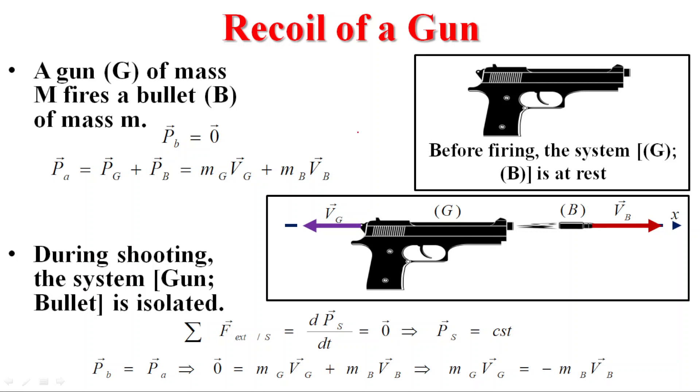The second application on conservation of linear momentum is recoil of a gun, cannon, or rifle.